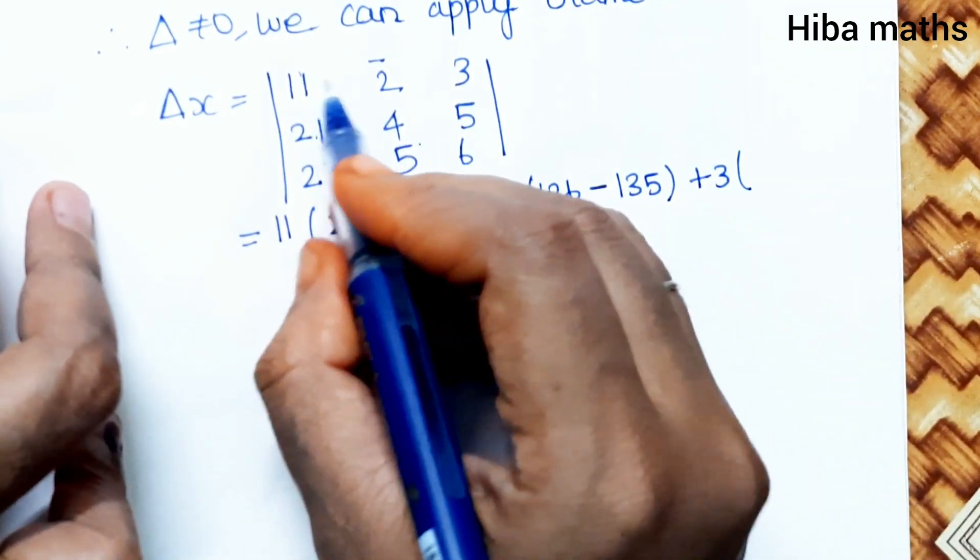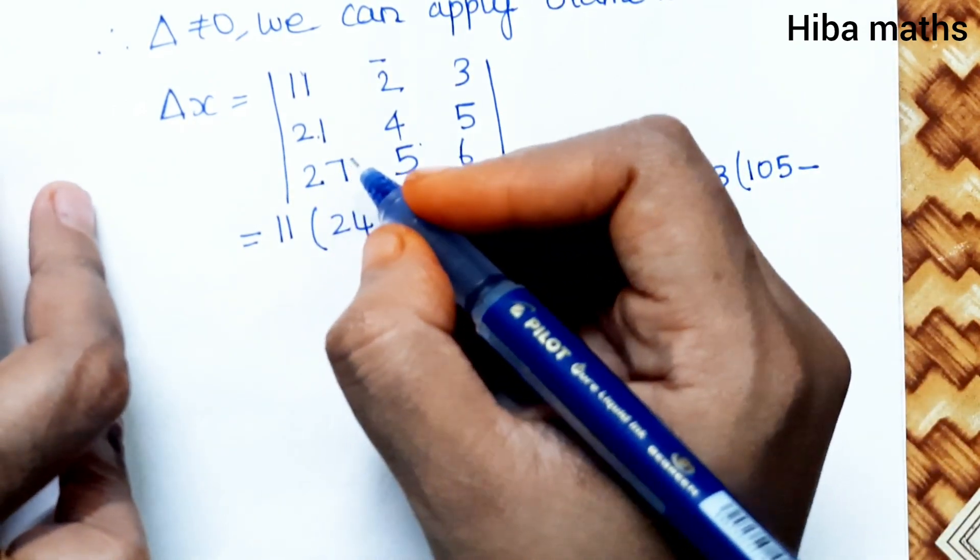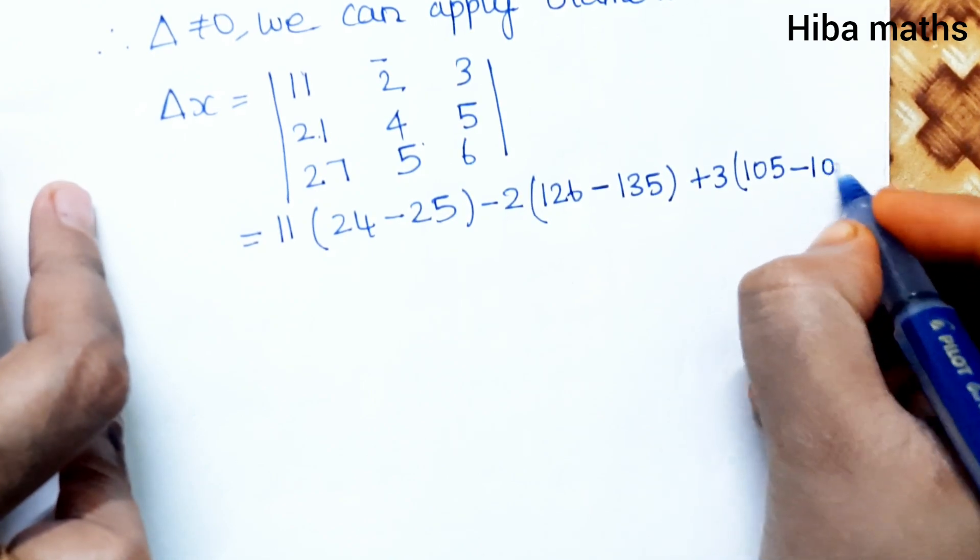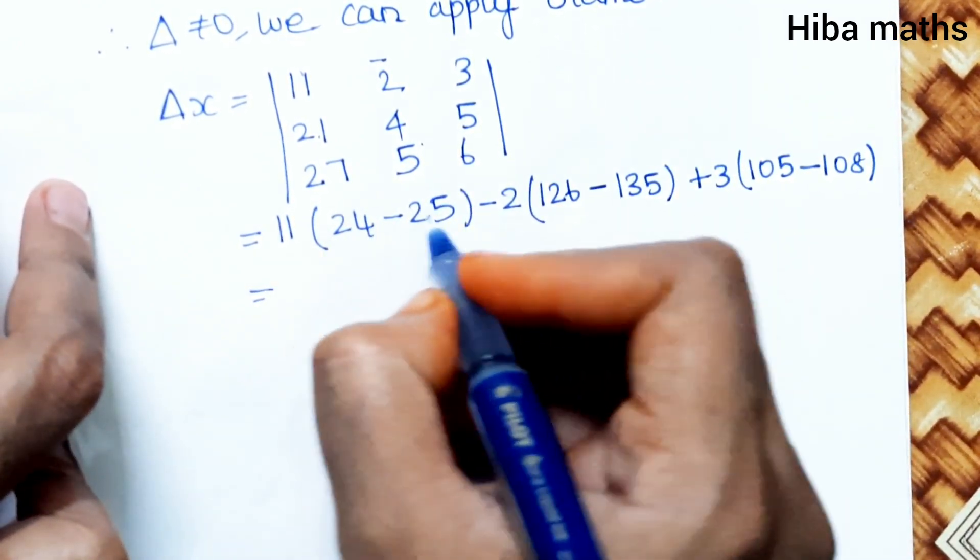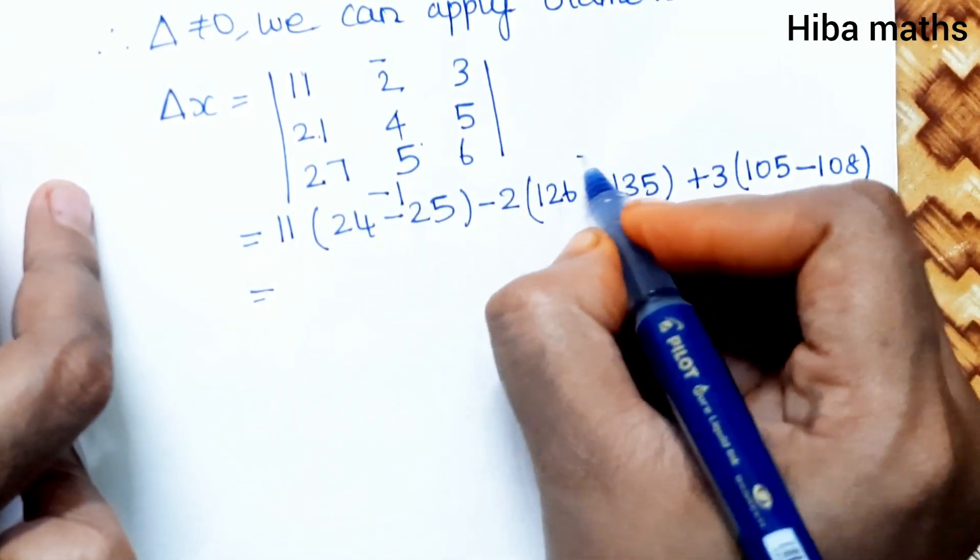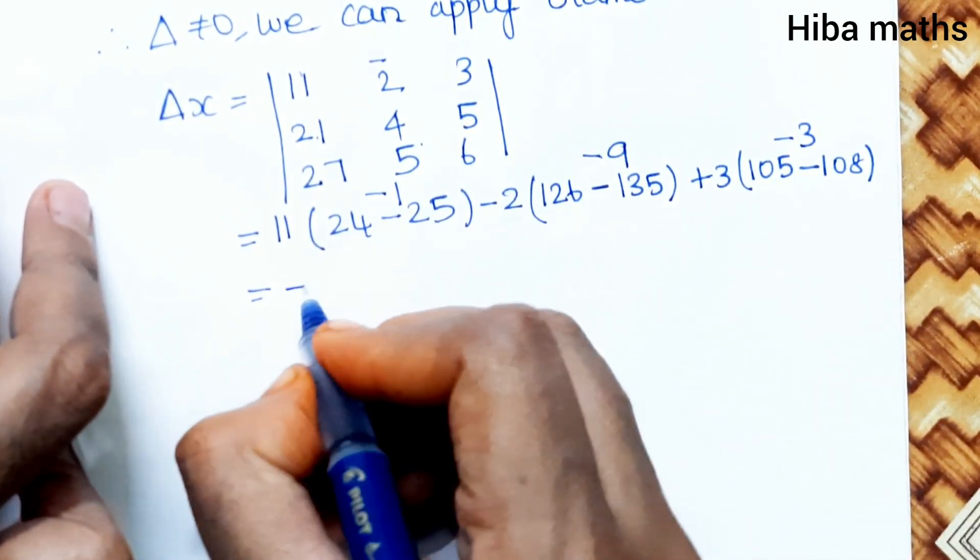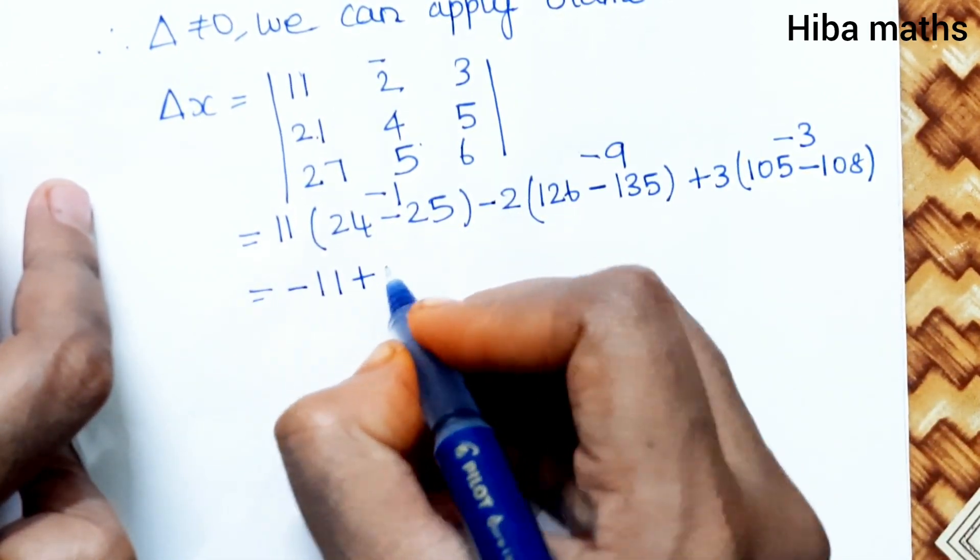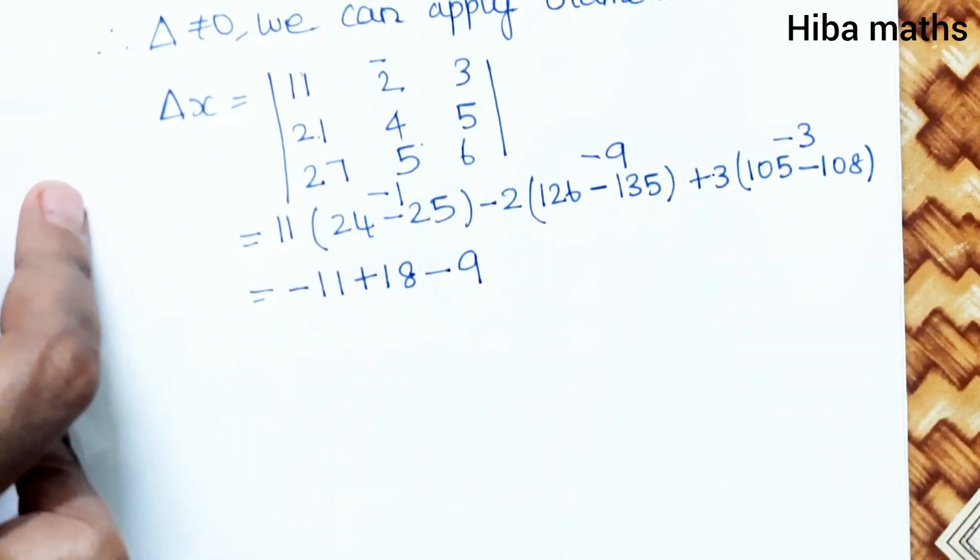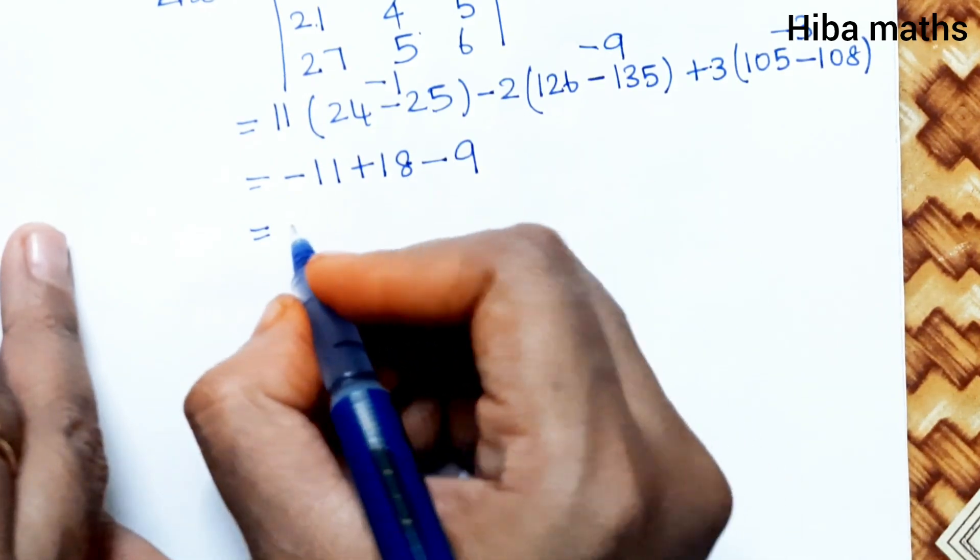Solving: -11 + 18 - 9 = -2. This is del X value, which equals -2.